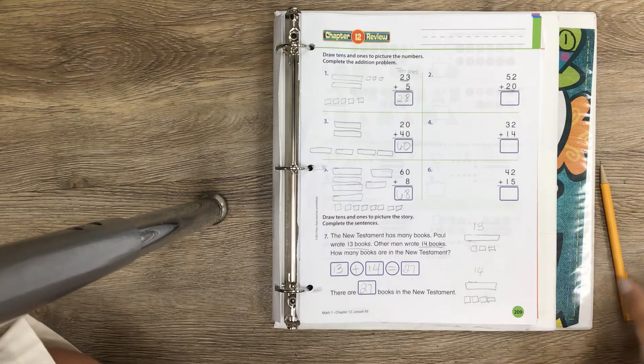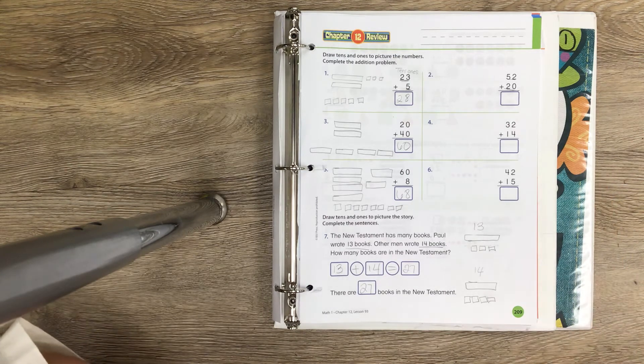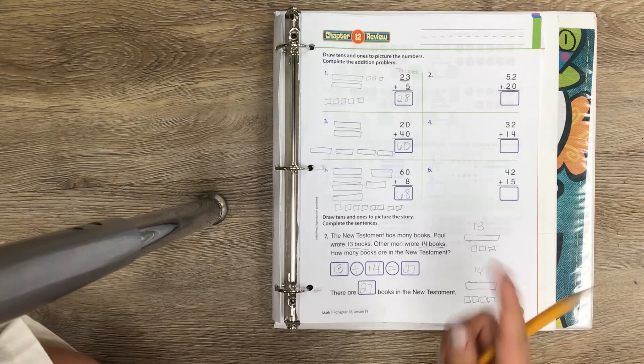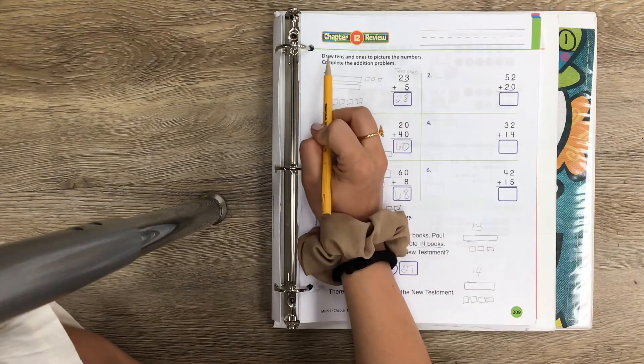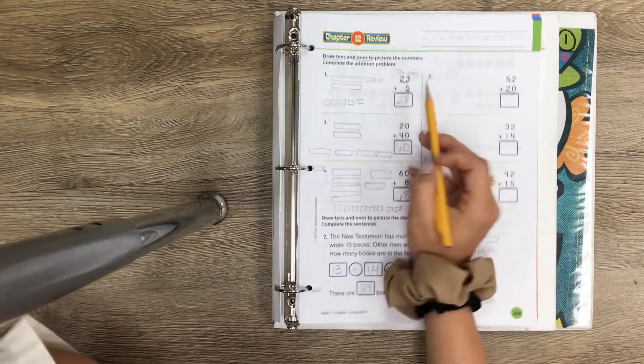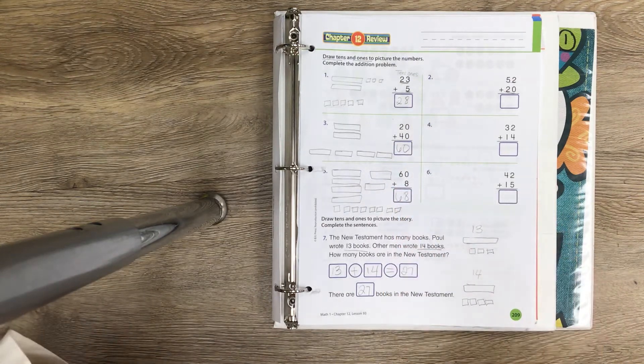If you guys could all turn to page 209, that would be great. What they want us to do is draw tens and ones to make the numbers and then add them all together to get our answer.